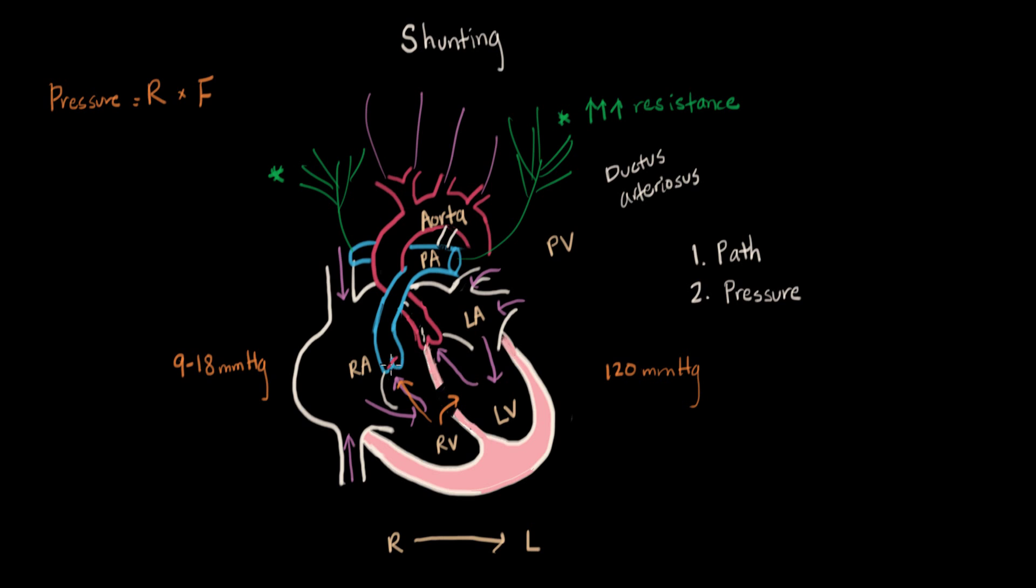The other way is, look at this valve here. This is called the pulmonary valve that connects the right ventricle to the pulmonary artery. This valve can be too tight. This artificially increases the resistance here. So again, blood, given the choice between here and here, is going to want to go to the left side. So that's also how you get shunting.